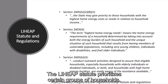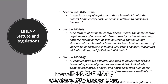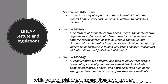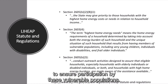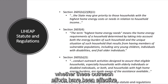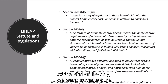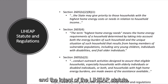The LIHEAP statute prioritizes certain groups of households. This includes households with high energy burdens, households with elderly members 60 years or older, members with disabilities, or households with young children ages 5 and under. With these directives in place, our LIHEAP program has targeted outreach efforts to ensure participation by these vulnerable populations. It's important to know whether these outreach efforts have been effective or if there is room for improvement. At the end of the day, we want to make sure that we are spending our funds in an effective way that meets our program goals and the intent of the LIHEAP statute.